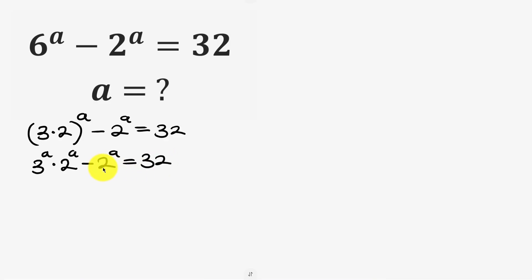Now notice that 2 to power a is common so we can factor out 2 to power a then open brackets. We have this term divided by 2 to power a, we have 3 to power a remaining minus 2 to power a divided by 2 to power a we have 1, and this is equal to 32.